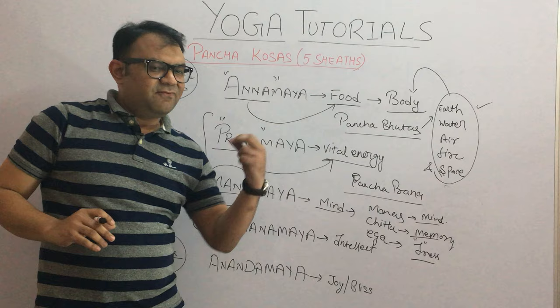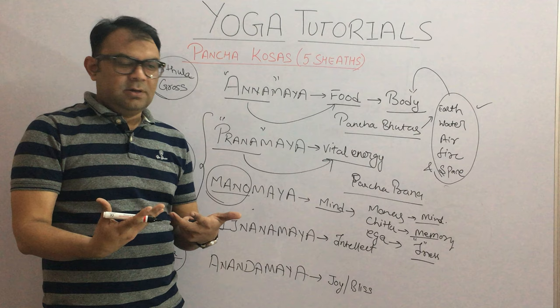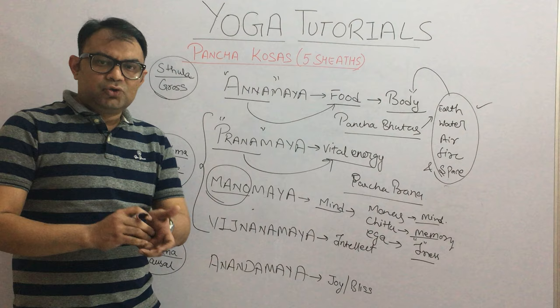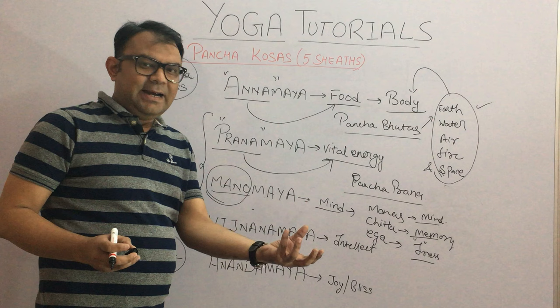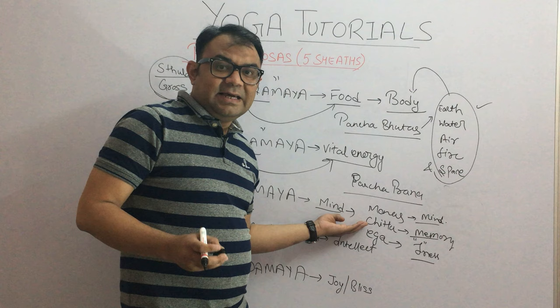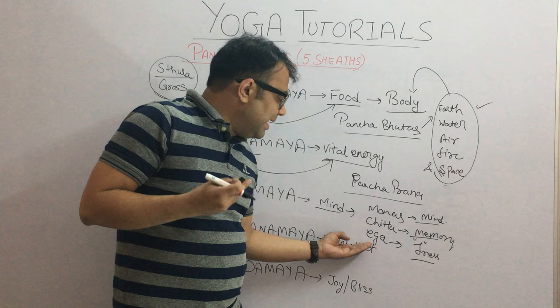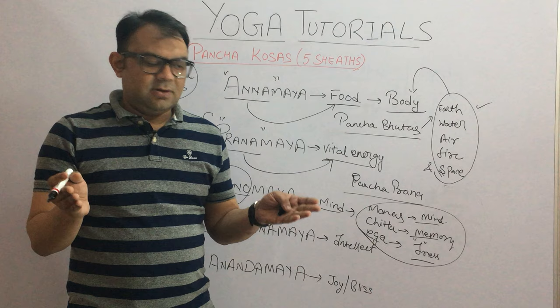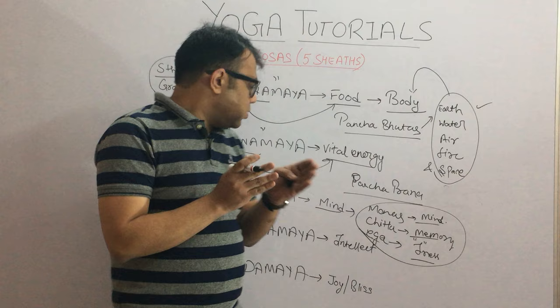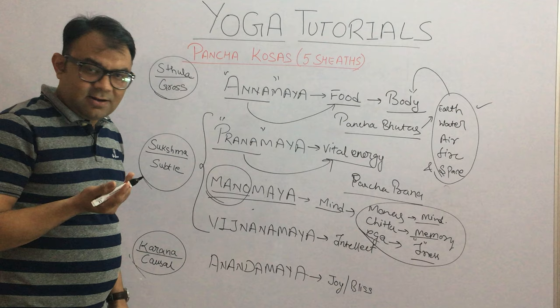We can understand the Manomaya Kosha with a beautiful example. Suppose you see a flower — you recognize it through your eyes, the signal goes to the mind, the mind recognizes it and sends it to memory, which is Chitta. Then you can say yes I like it or I dislike it. This like or dislike concept — I like this flower, I hate this flower, I like this person, I hate this person — all comes under the Manomaya Kosha.